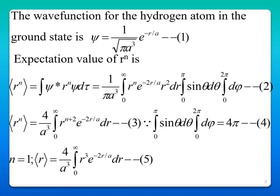If you integrate the angular part, it is equal to 4pi. So the expectation value of r power n is 4 by a³, integral from 0 to infinity r power n plus 2, e power minus 2r by a, dr.